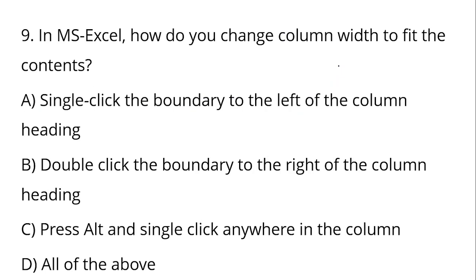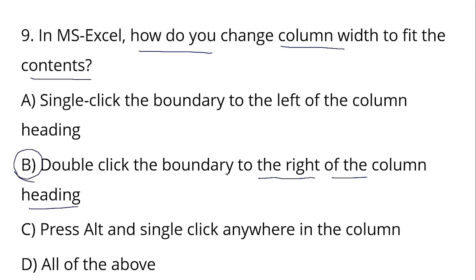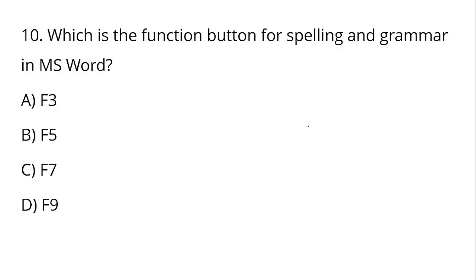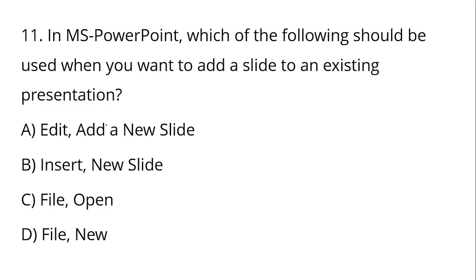Question number 9: In MS Excel, how do you change the column width to fit the contents? Option B — double-click on the boundary to the right of the column heading — is the correct answer. Question number 10: Which is the function button for Spelling and Grammar in MS Word? The answer is F7, or you can go to the Review tab under Proofing to check Spelling and Grammar.